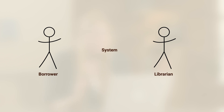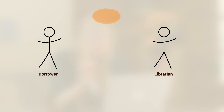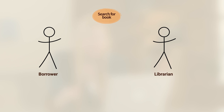Now let's go ahead and add our first use case. We said that the borrower can search for a book. I'll add the use case as a circle or an oval within the system. I can simply write 'search book.' Now who can perform this action, the borrower or the librarian?